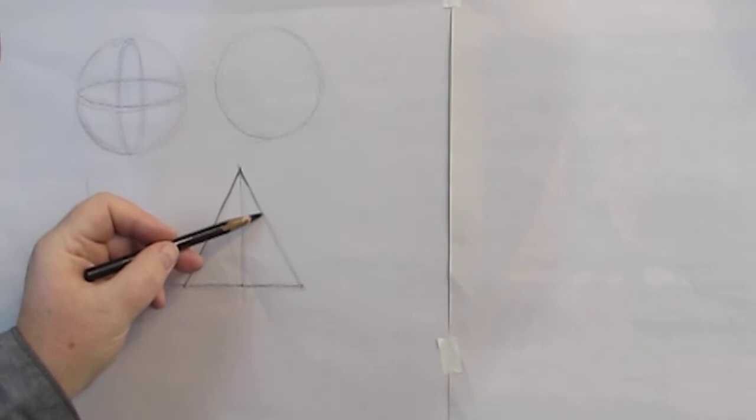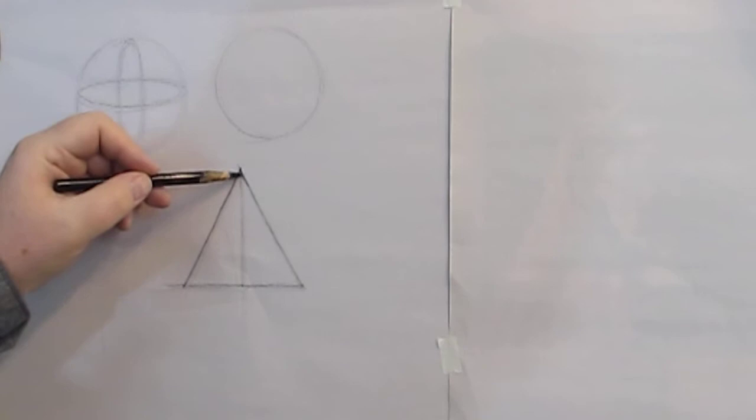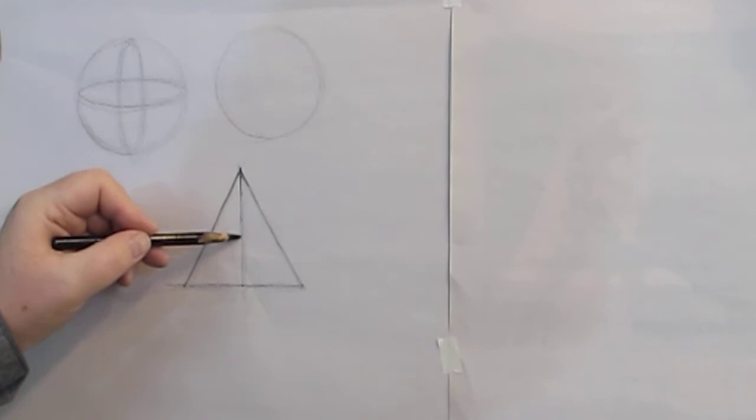So yeah this would be our starting triangle. And then we have, now this is our center line that we used, and again if I was drawing this, this would stay very light so I could erase it so no one would need to know.